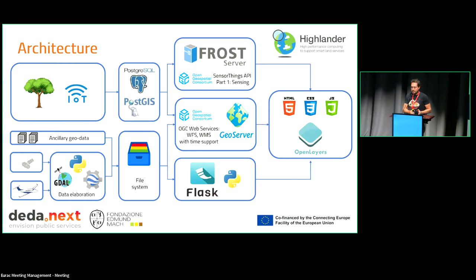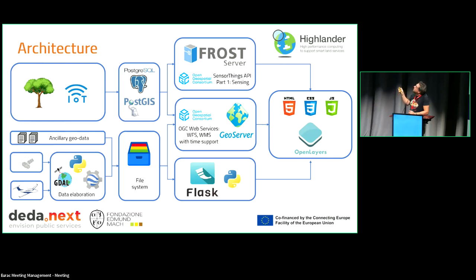I will describe the architecture behind it and the interfaces of the six different tools. There are basically two different types of data sources. First, there's IoT data, specifically related to the tool that shows the physiological properties of single trees — sensors attached to trees. Data from those sensors is collected, put in a database, and then served via a service implementing a standard for sensor data.